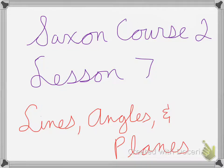Alright, so Saxon Course 2, Lesson 7 is Lines, Angles, and Planes.